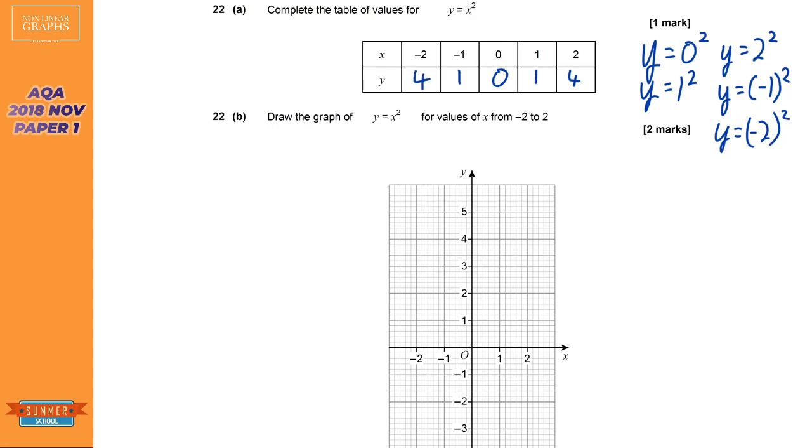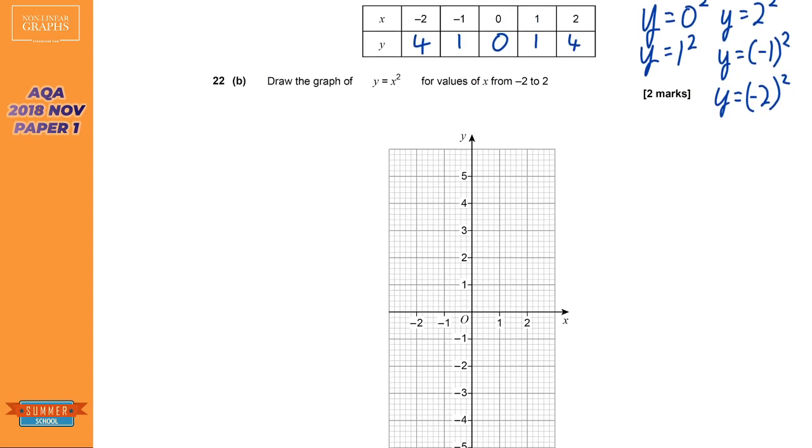Question B asks us to plot that onto the graph. So each of these are coordinates. It starts off with the x-coordinate, then the y-coordinate. So the x-coordinate is 2, and the y-coordinate is 4. So we're going to plot 2, 4. Then we go on to the next one. Minus 1 is the x-coordinate, and 1 is the y-coordinate. Then the next coordinate is 0, 0. Then we're kind of doing almost the same, but on the right-hand side, so 1, 1 will be here. And 2, 4 is our last one.